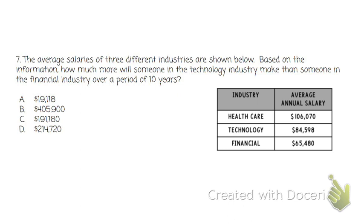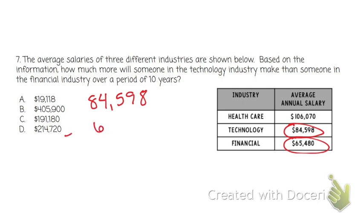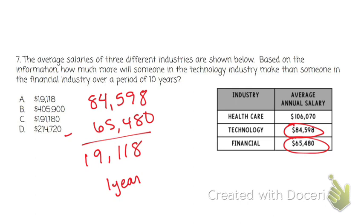Number seven: the average salaries of three different industries are shown below. Based on the information, how much more will someone in the technology industry make than someone in the financial industry over 10 years? I'm looking at technology and financial. What I would do is subtract them first — $84,598 minus $65,480 gives $19,118. That's how much more they make in one year. To find it over 10 years, I just multiply by 10, and I get answer C: $191,180.